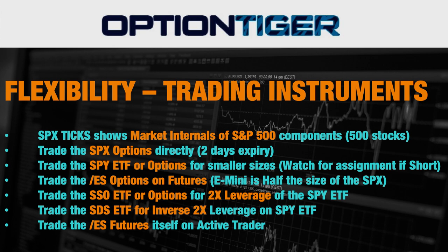The SPX TICS shows the market internals of the S&P 500 components. There are 500 stocks and the TICS calculates the uptick minus the downtick of all 500 stocks once the market starts trading at 9:30 a.m. Eastern time. You can trade the SPX options directly with about two days to expiry — you don't need to go more than two days to expiry, as covered in the previous two videos.